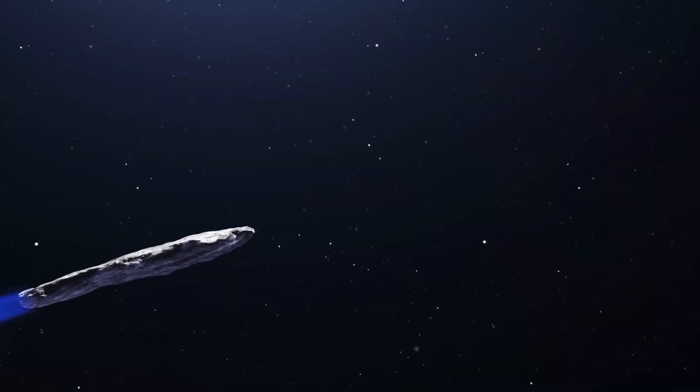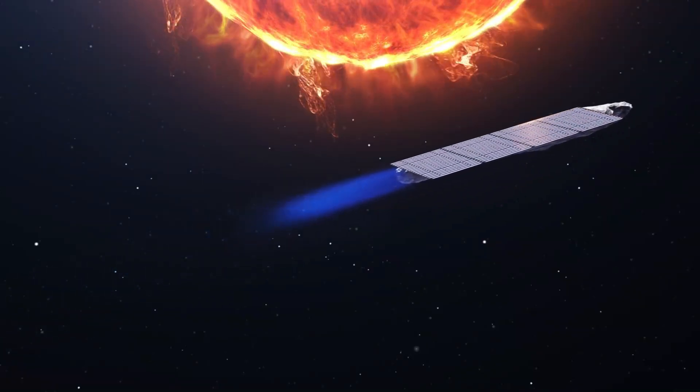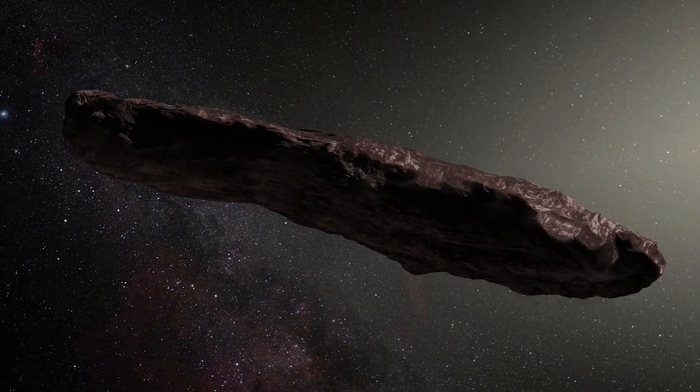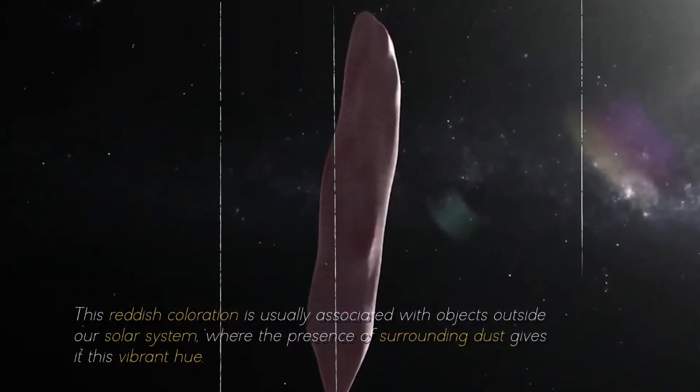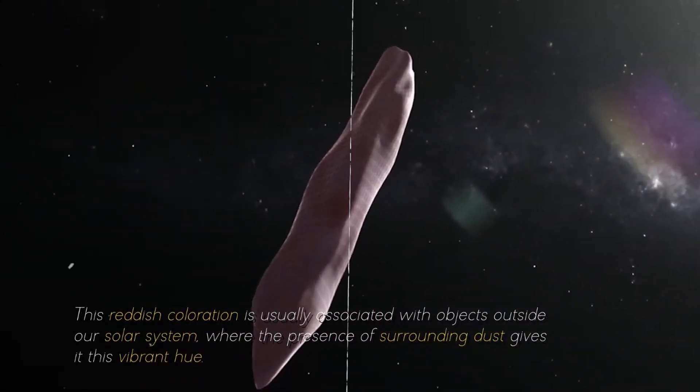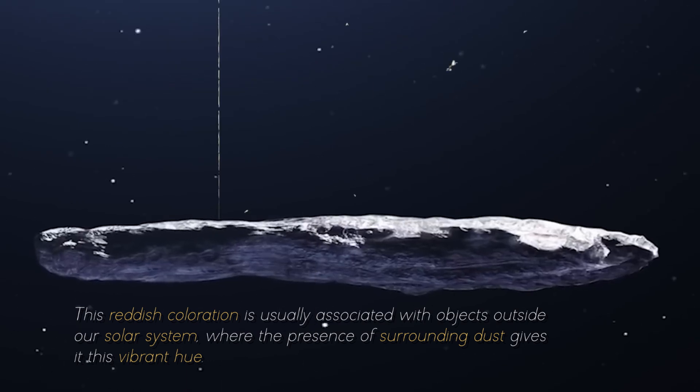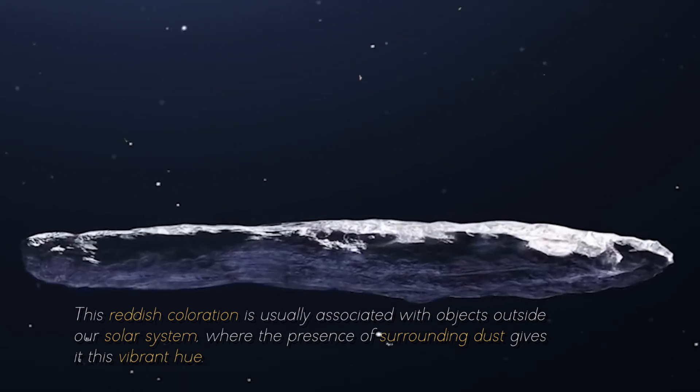As if Oumuamua's peculiar shape and massive size were not puzzling enough, it also revealed another striking feature, a distinctive reddish hue. This reddish coloration is usually associated with objects outside our solar system, where the presence of surrounding dust gives it this vibrant hue.